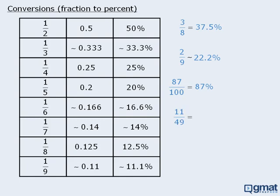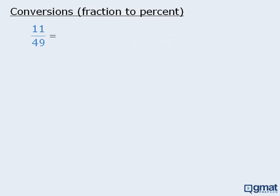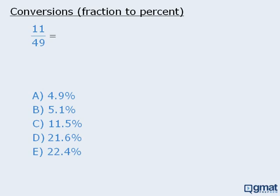How do we convert 11 over 49 into a percent? Let's say we are solving some question and we find that the answer is equal to 11 over 49, and we must convert this into a percent. Since the answer choices are very close to one another, we might feel we cannot use estimation and resort to long division — but while valid, this is too time-consuming for the GMAT. Instead, we should be able to convert this fraction to a percent within seconds and in our heads.